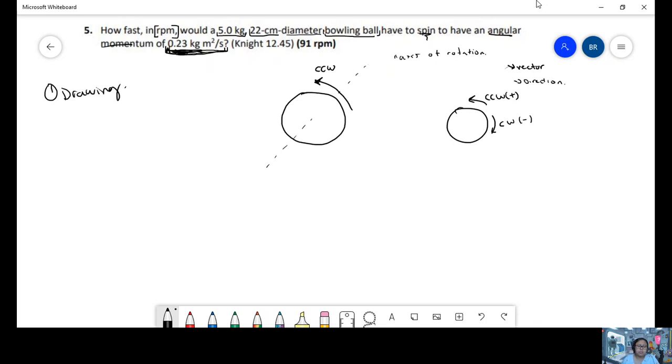For linear momentum, P equals mass times velocity.